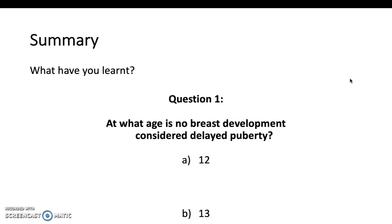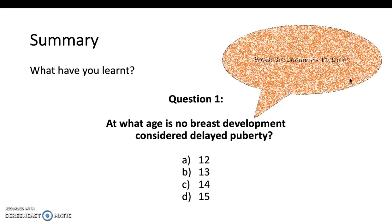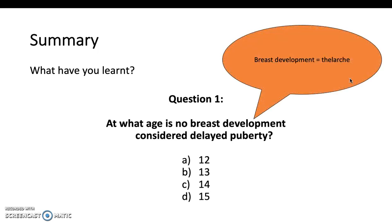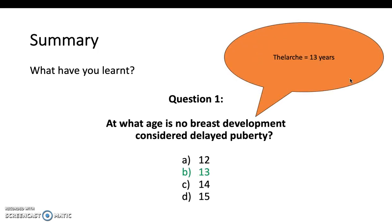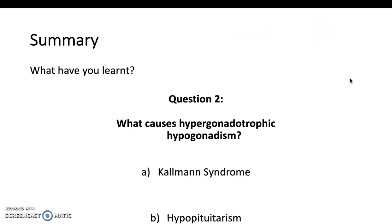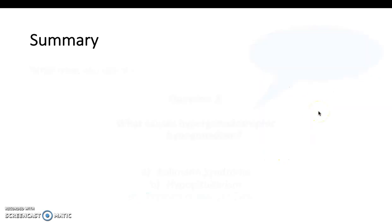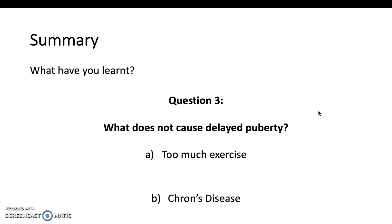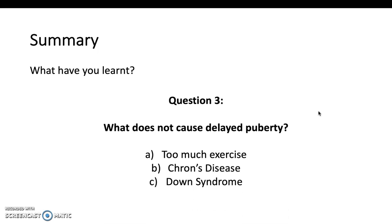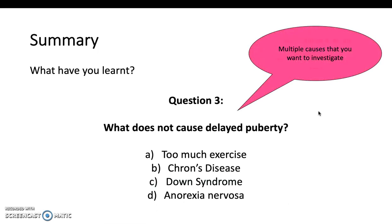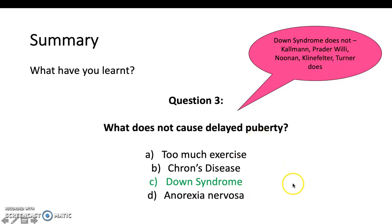Final review questions: at what age is no breast development considered delayed puberty? — 13 years. What causes hypergonadotrophic hypogonadism? — Primary failure, such as premature ovarian failure. And what does not cause delayed puberty? — Down syndrome. Thank you very much and I hope you enjoyed the video.